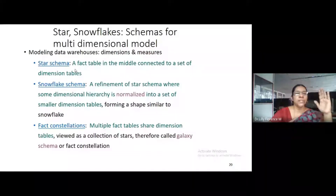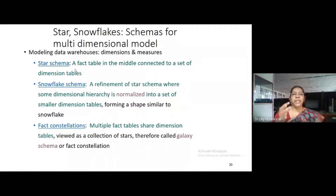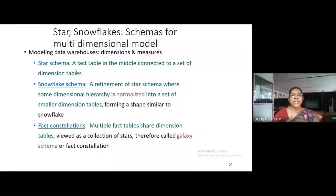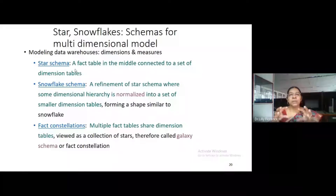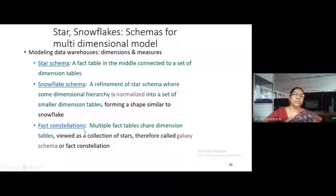The data warehouse can be represented using cube structure. Now, how we are representing schemas for the multidimensional model: usually in DBMS we create views and apply all our queries. Similarly here, for schemas there are three types of structures we are using — star schema, snowflake schema, and fact constellations schema.